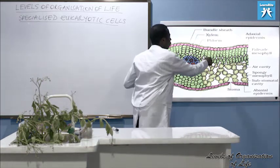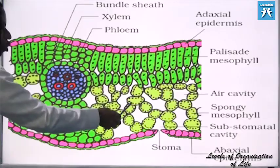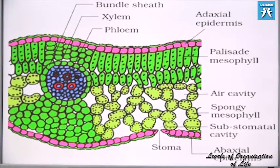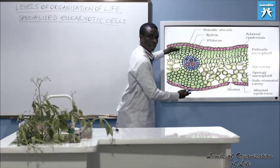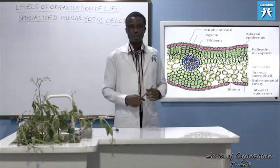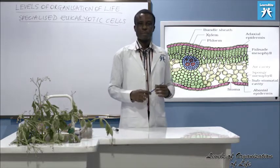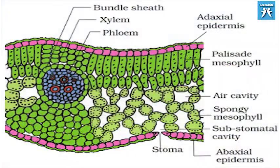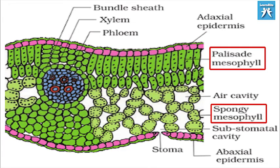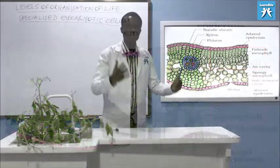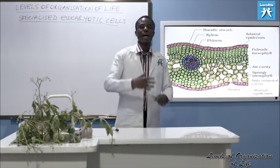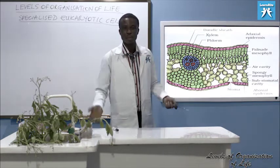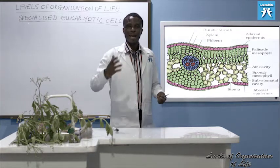Let's look at more adaptations of mesophyll cells — palisade mesophyll. These are mesophyll cells, and a bulk of cells in a plant are mesophyll cells. A larger portion of cells in the leaf are mesophyll cells. We have two groups: palisade mesophyll and spongy mesophyll. Let's look at why mesophyll cells are capable of performing photosynthetic function as against other cells.